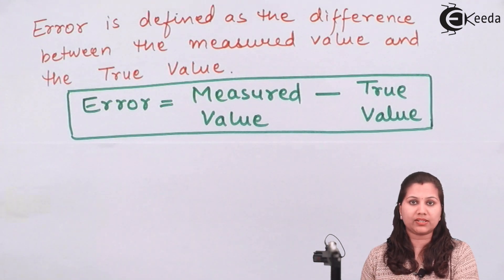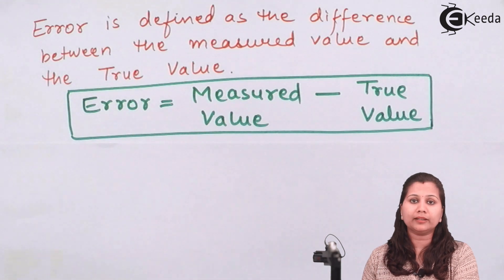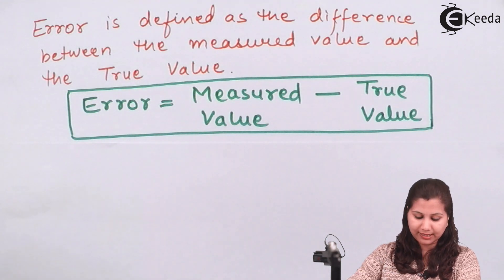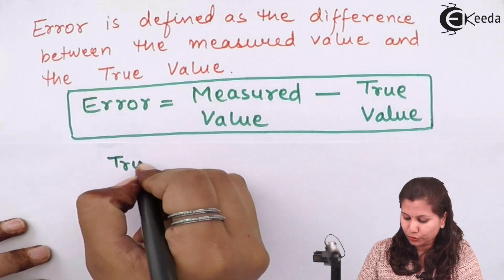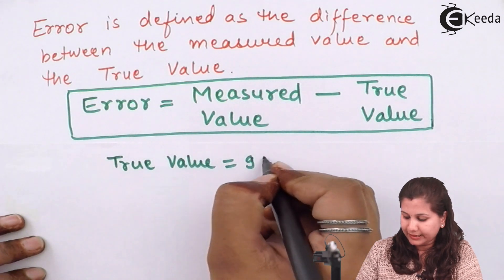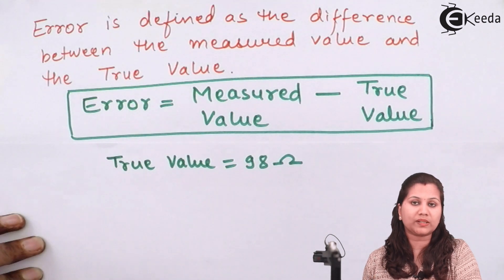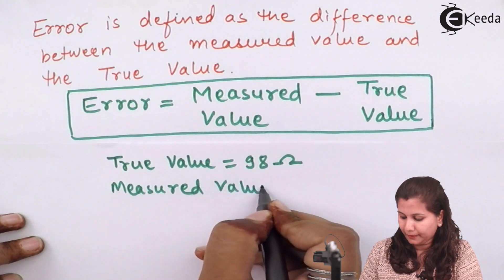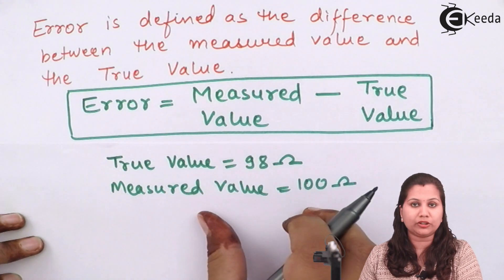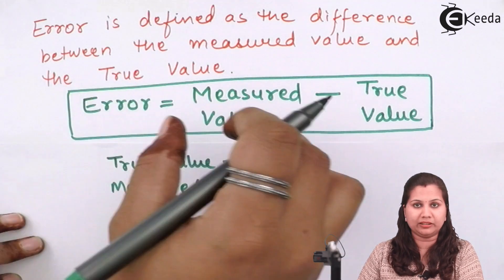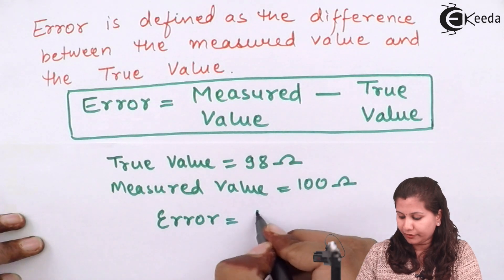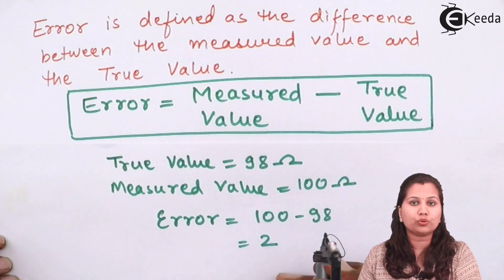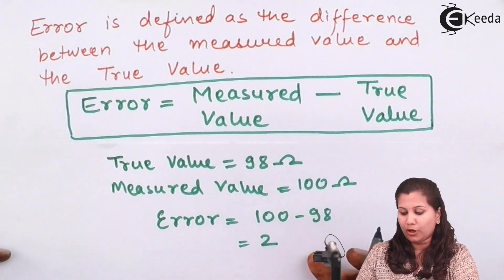The formula for error is: error equals measured value minus true value. Suppose we are measuring a resistance using a multimeter and we know the actual value of the resistance is 98 ohms — that is the true value. When we measure it with the multimeter we get a reading of 100 ohms. So the error will be 100 minus 98, which equals 2 ohms. So 2 ohms is the error in the measurement.